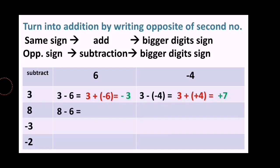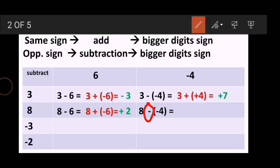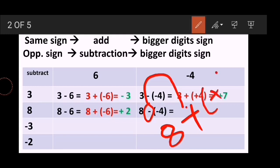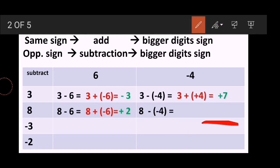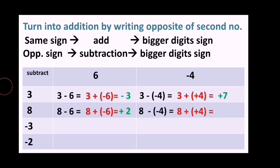The second row gives 8 minus 6. The subtraction sign means the second number is positive 6, turned into negative 6. With opposite signs - positive 8 and negative 6 - we subtract to get positive 2. For the second column, 8 minus negative 4: the negative 4 is turned into positive 4. Both numbers now have the same positive sign, so we add: 8 plus 4 equals positive 12.